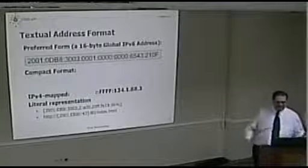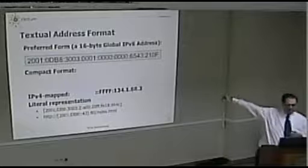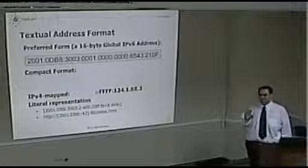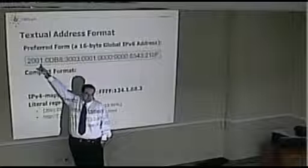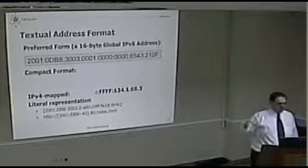Address presentation: we are going to use hexadecimal with colon notation. How many bits does a hex digit represent? Four. We have 16 hexadecimal digits, and each group separated by a colon represents four hex digits — so each colon-separated field is a 16-bit boundary.